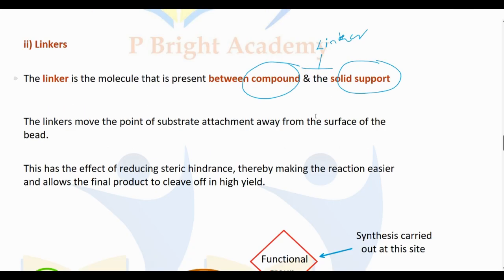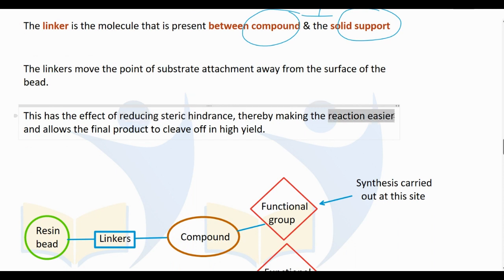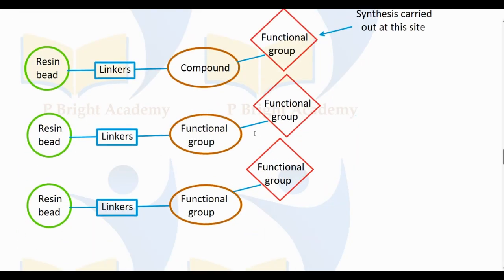The linker is very important. It reduces the steric hindrance. If we have a final product, we can get maximum yield. The linker is important because in the case of a compound, there will be factors which affect the reaction. This factor is important — it reduces and inhibits unwanted reaction processes.